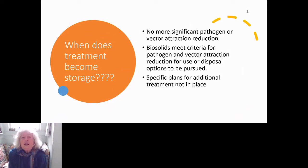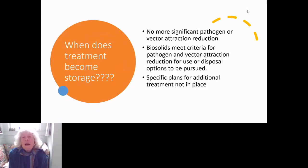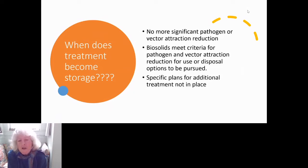If the sludge has reached the point where it meets the criteria for pathogen and vector attraction reduction — dried for more than three years and dried to over 90% solids — then we'd consider it storage as opposed to treatment. If there are specific plans to dry it further or other plans for it, that should be documented. Otherwise, at some point we'd say it's no longer being treated, it's storage, and if it's more than two years, it's surface disposal and you need to meet the surface disposal requirements.